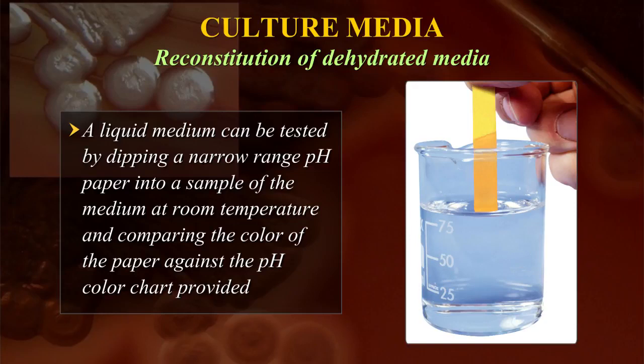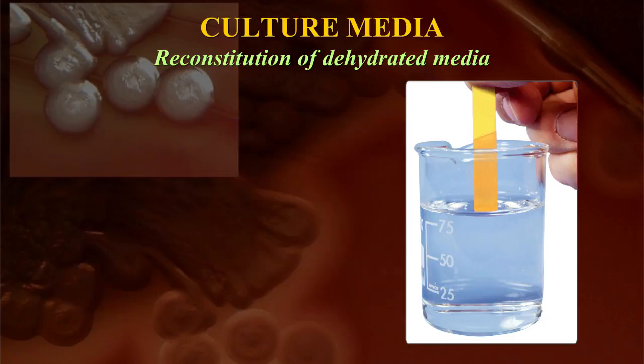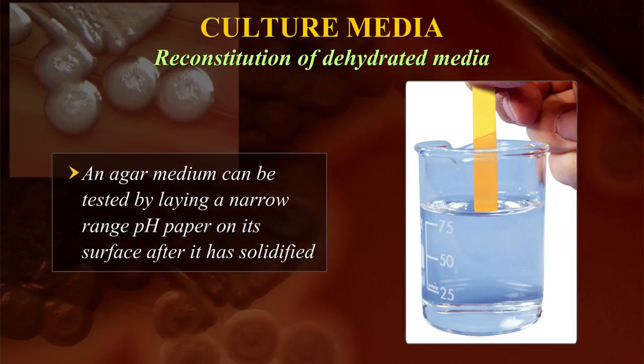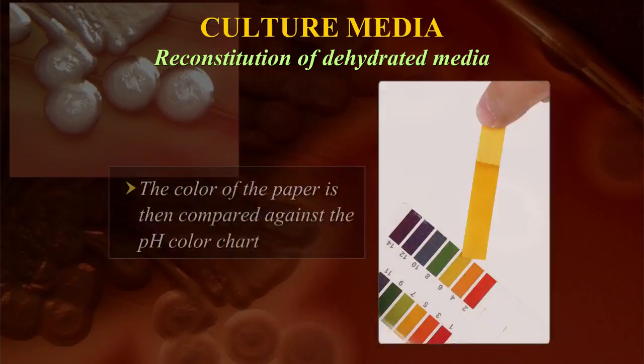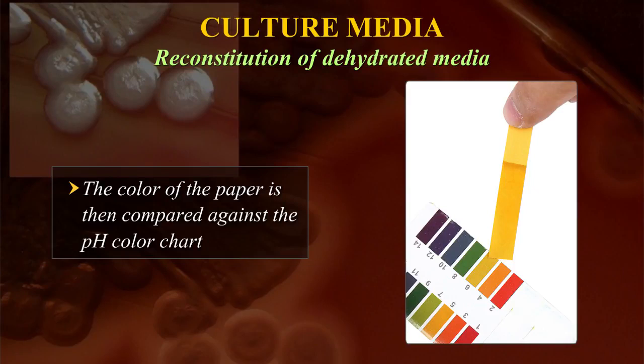A liquid medium can be tested by dipping a narrow range pH paper into a sample of the medium at room temperature and comparing the colour of the paper against the pH colour chart provided. An agar medium can be tested by laying a narrow range pH paper on its surface after it has solidified, then comparing the colour of the paper against the pH colour chart.